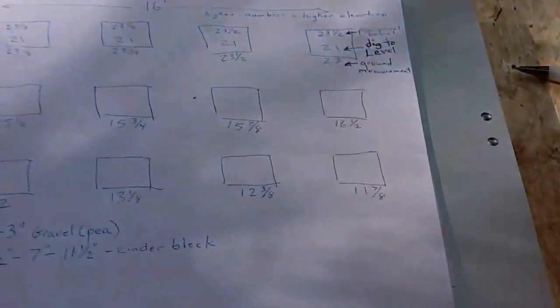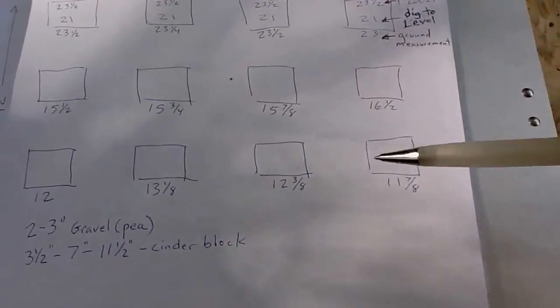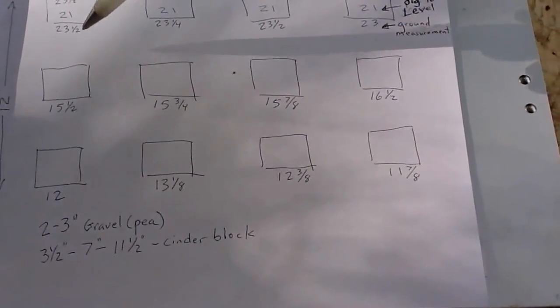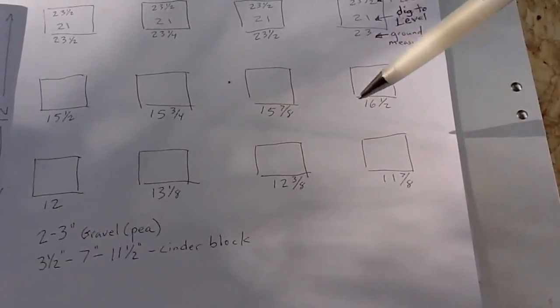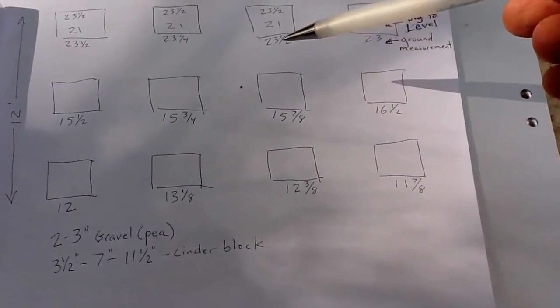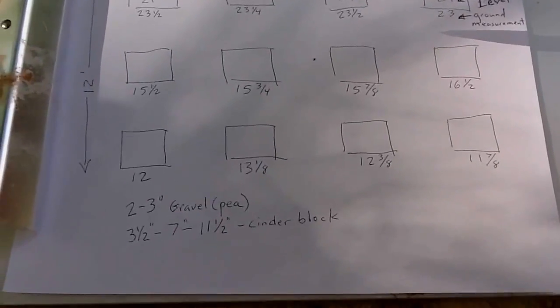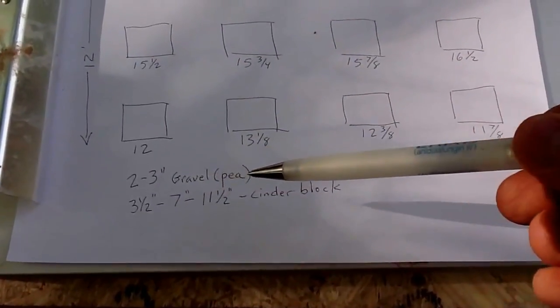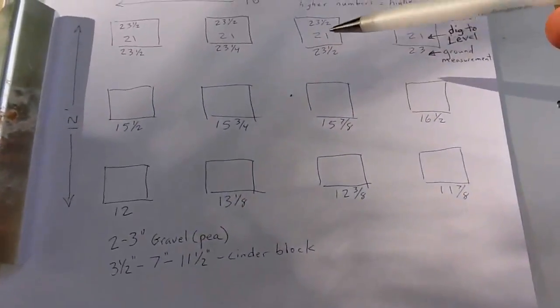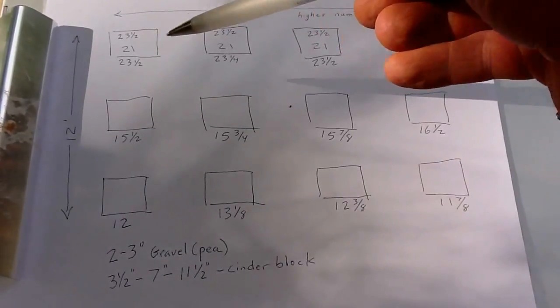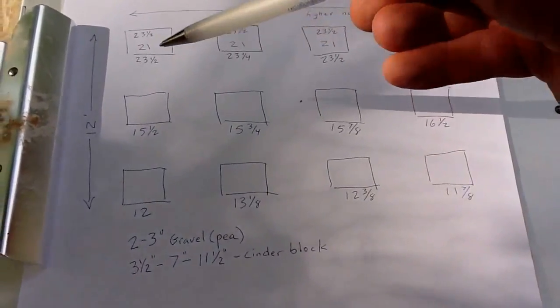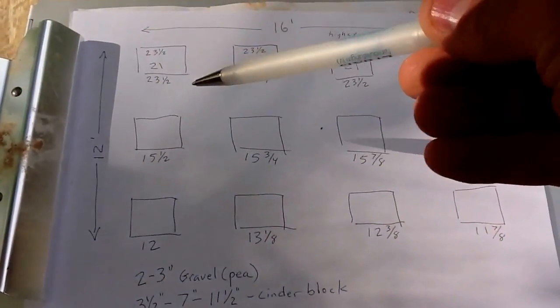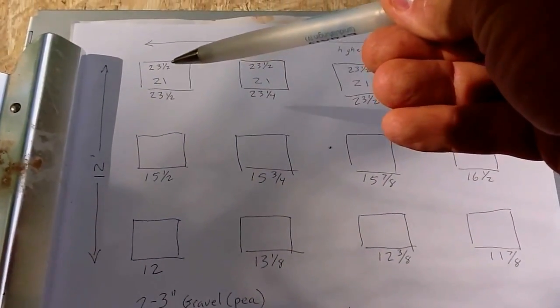Here are the blocks and initial measurements. We dug down two and a half inches for our gravel. I tamped and dug it down till everything was 21 inches, and then I added two and a half inches of gravel.